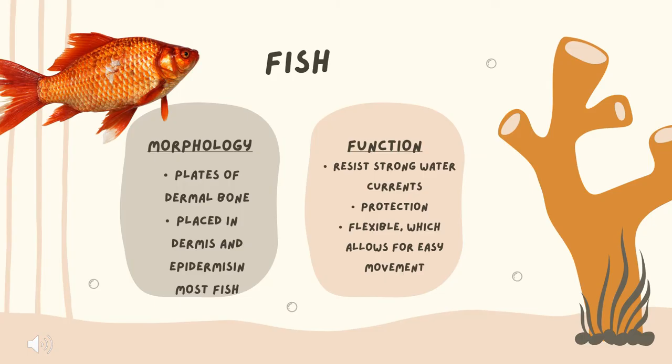Next I'm going to go a little more in depth about the types of scales that fish may have. Starting with the morphology of fish scales, it's basically just the first two layers of what would be the fish's skin if they had any. The function of these scales ranges from resisting strong water currents and protection from enemies, to helping them be more flexible, which allows for easy movement and quick sharp turns in the water.